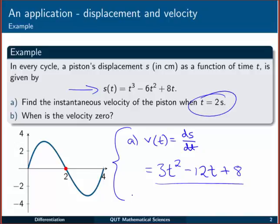We're asked to find it for t = 2 seconds. All we have to do is substitute in t = 2. So we get 3 × 2² which is 4, that's 12, minus 12 × 2, and plus 8. So we're going to get all together there, 12 - 24 is -12, plus 8 is going to be -4, and we can put in the units too, centimeters per second. So -4 centimeters per second is the velocity, so it's moving backwards.